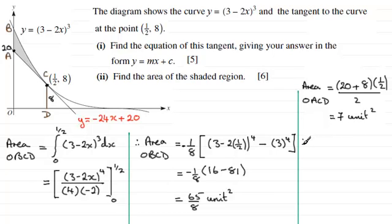So, therefore, when it comes on to the shaded area, what's it going to be? Well, it's just going to be the area under the curve, 65 eighths, minus the other trapezium, minus 7. And if you do that, you end up with 9 eighths. 9 eighths unit squared.